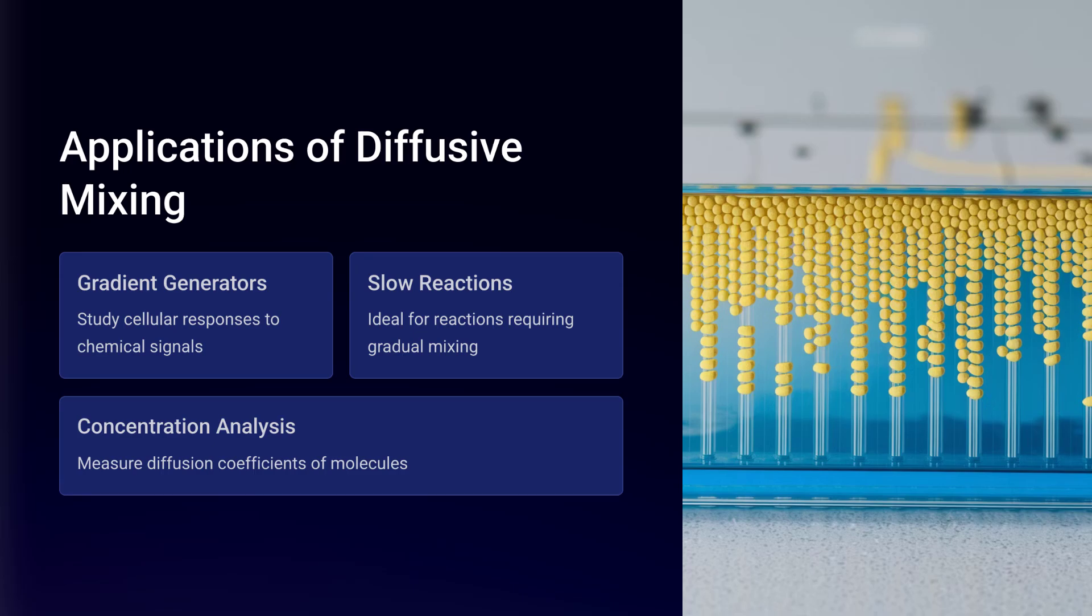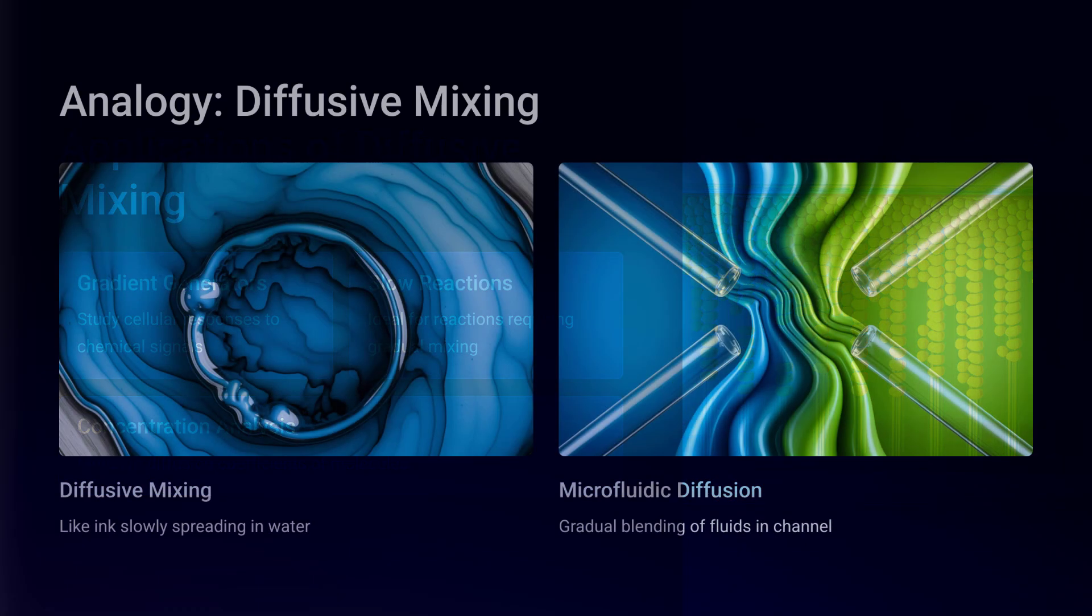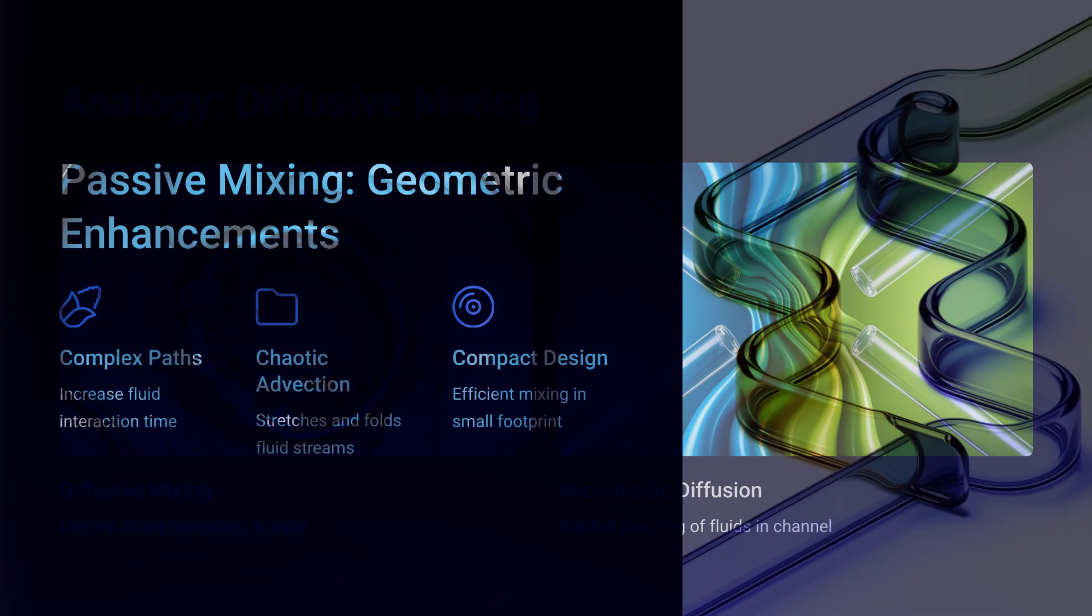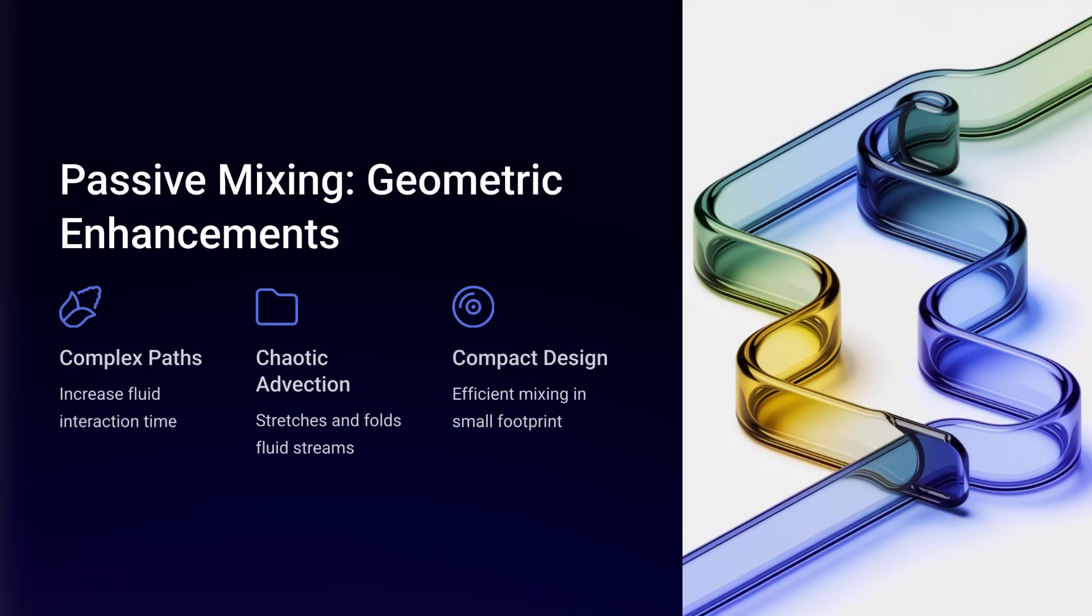Another passive technique is droplet-based mixing, where small discrete droplets of liquid are generated and circulated internally, much like shaking a tiny vial to enhance reaction efficiency.